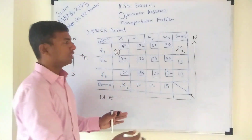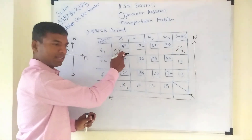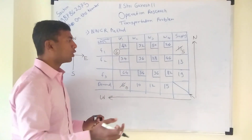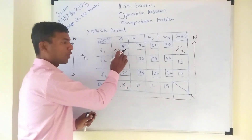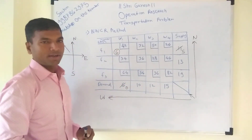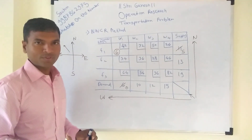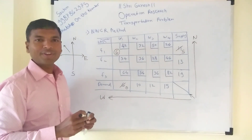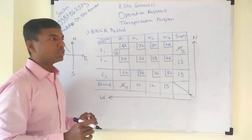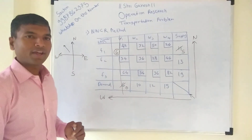Once you put 6 there and subtract from both demand and supply, warehouse 1 now has demand 0. In future we cannot do anything more with warehouse 1 — they are done with their demand. So you have to cancel warehouse 1 by drawing a line through it. We cannot do anything with warehouse 1 in future. This is the remaining sum — 9 cells are remaining.